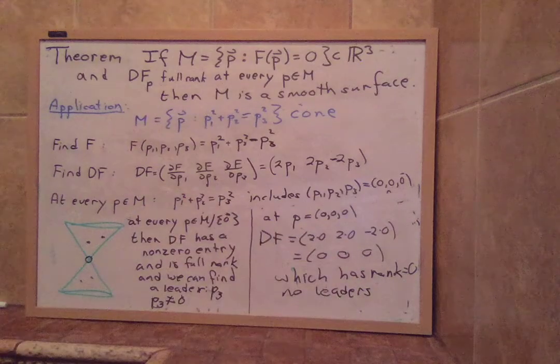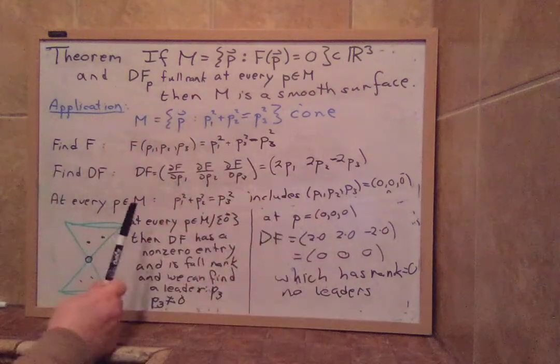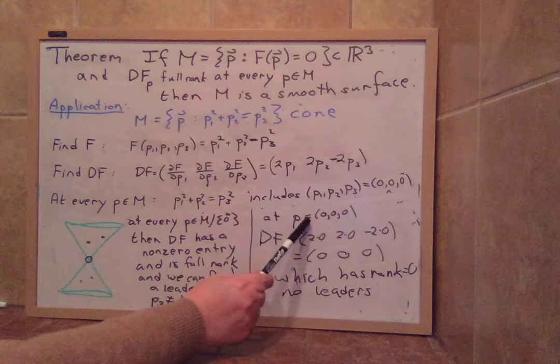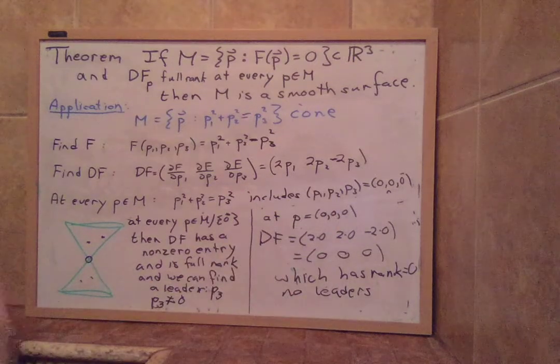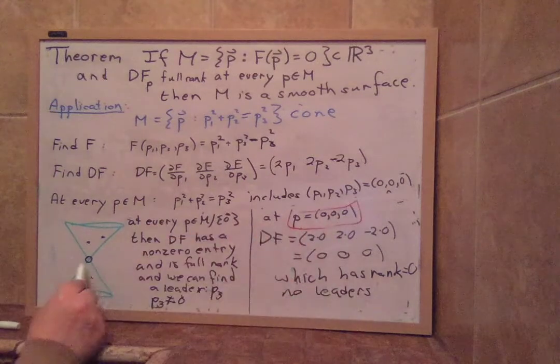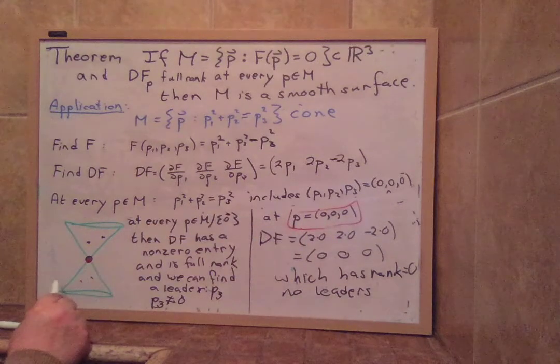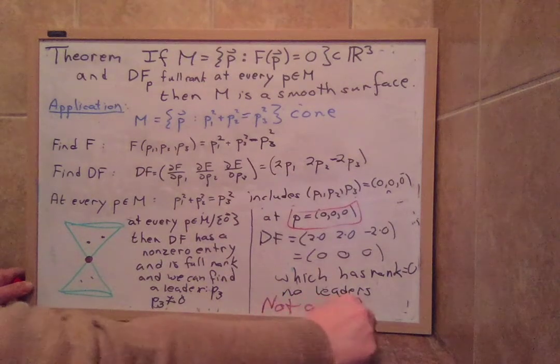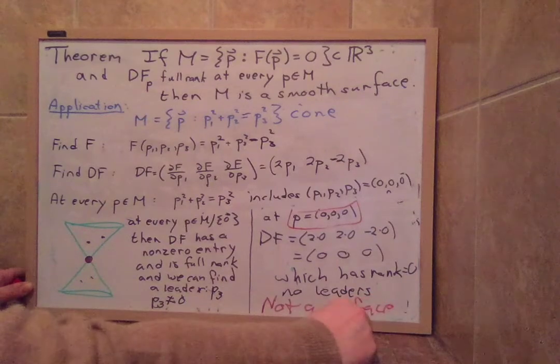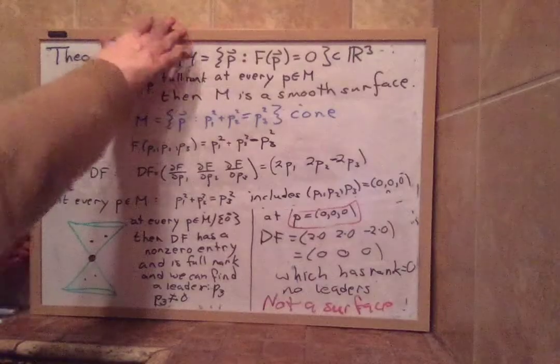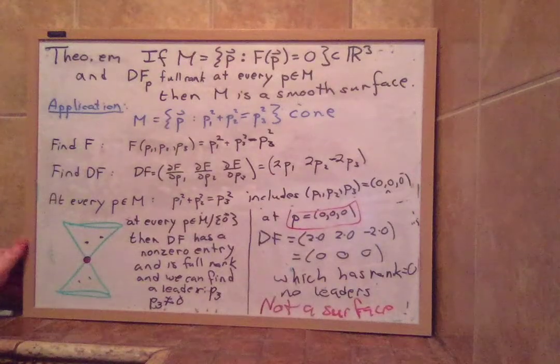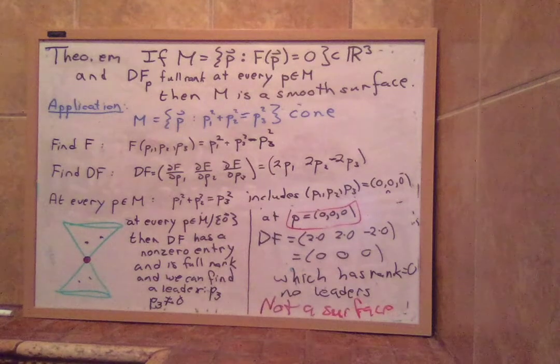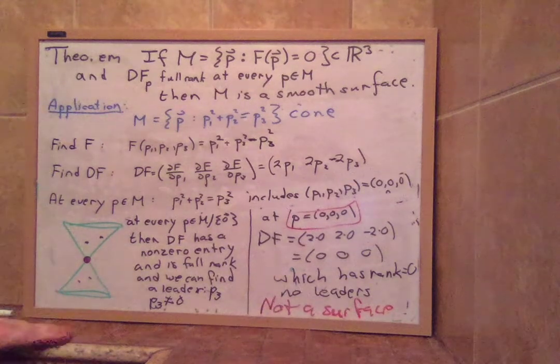So here we were. We said, oh, M is the cone. And we checked all these points up here. And all these points are fine. But at this p, 0, 0, 0, this point, this one bad point is enough to ruin the whole surface. So it is not a surface. The cone is not a surface. All right? So what I'm going to have you do next is you're going to do a couple of cases where you're going to look at an M and you're going to determine whether or not it is a surface using this method.